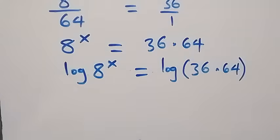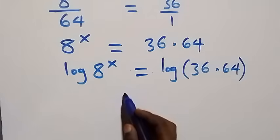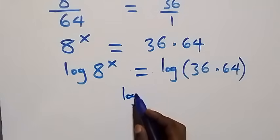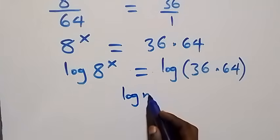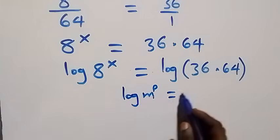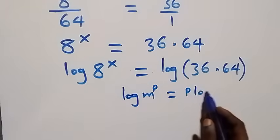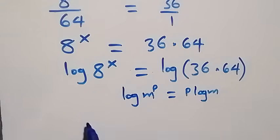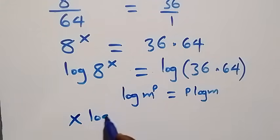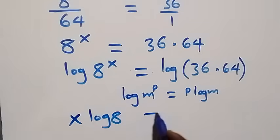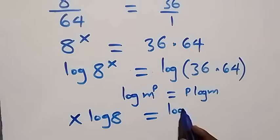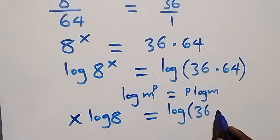From here we apply the power law of logarithm: when we have log m raised to power p, that equals p log m. So what we have here becomes x log 8 equals log of 36 times 64.